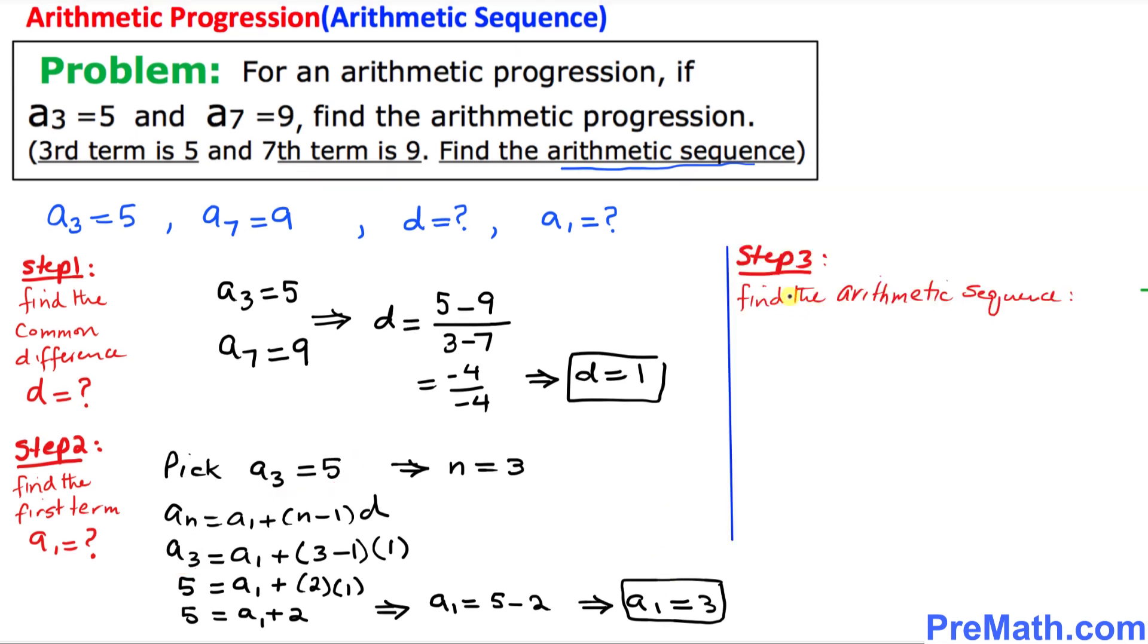And in our next step, step number 3, we are finally going to find the arithmetic sequence. We know that a₁, the very first term we figured out from the previous step, is 3, and the common difference d = 1.